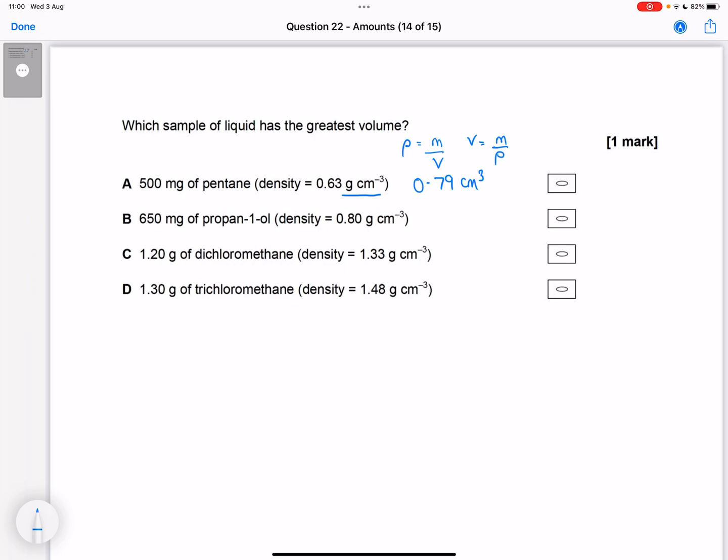650 milligrams divided by 0.8 is 0.81 centimeters cubed.